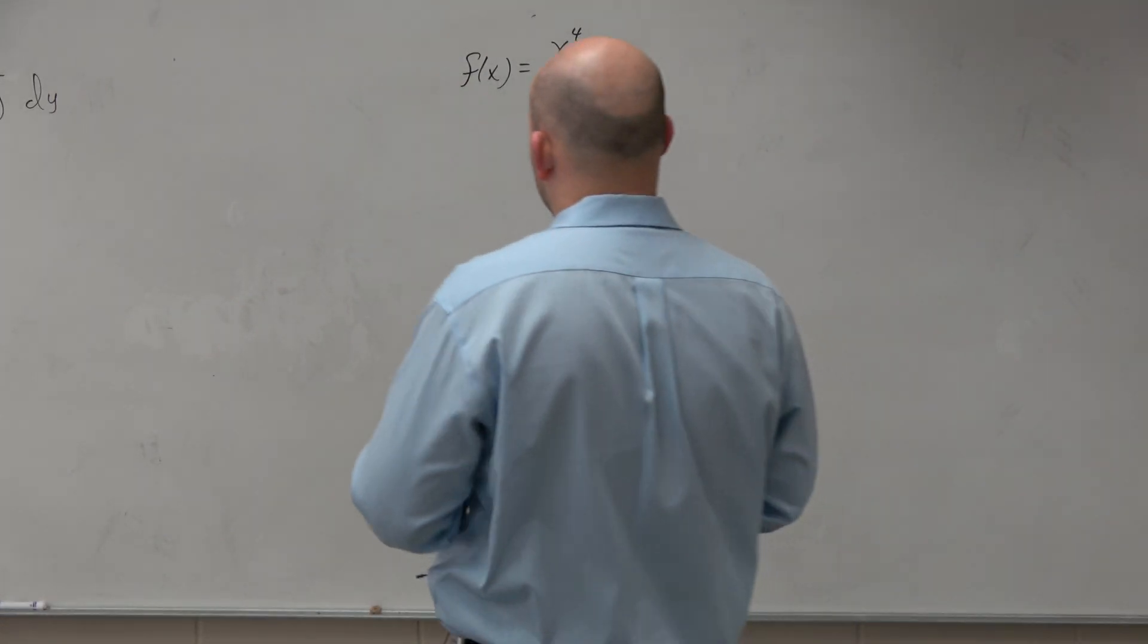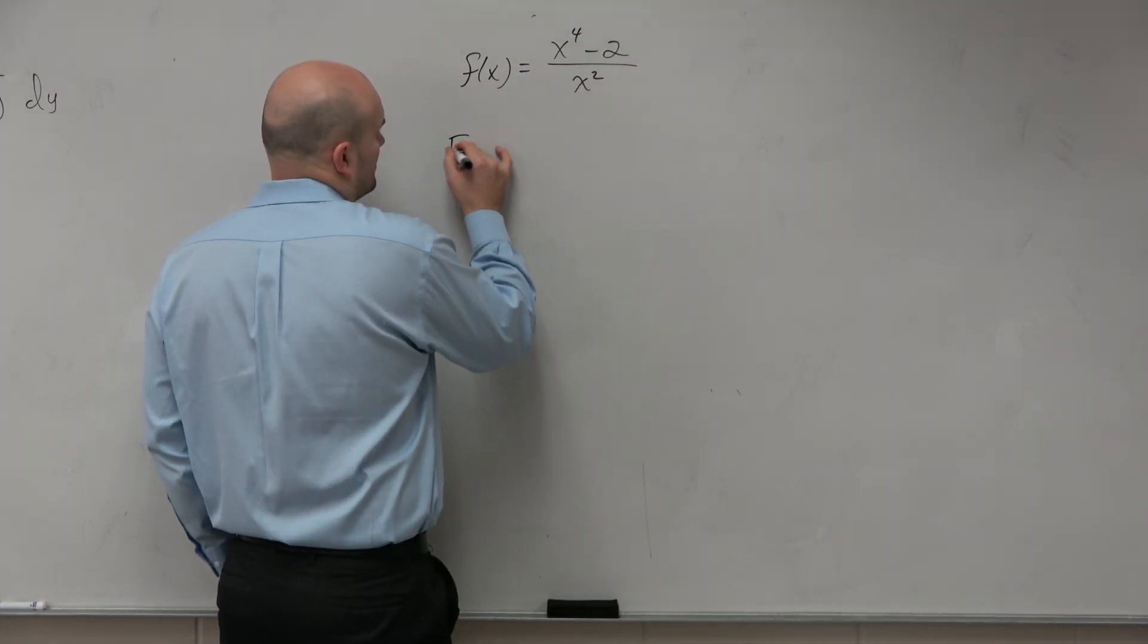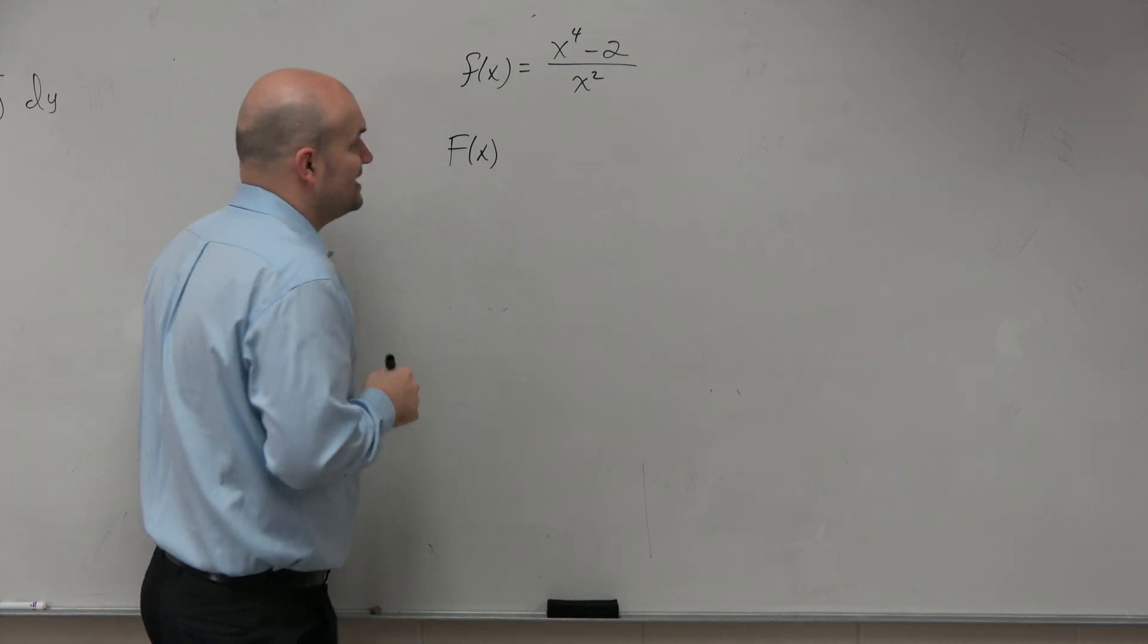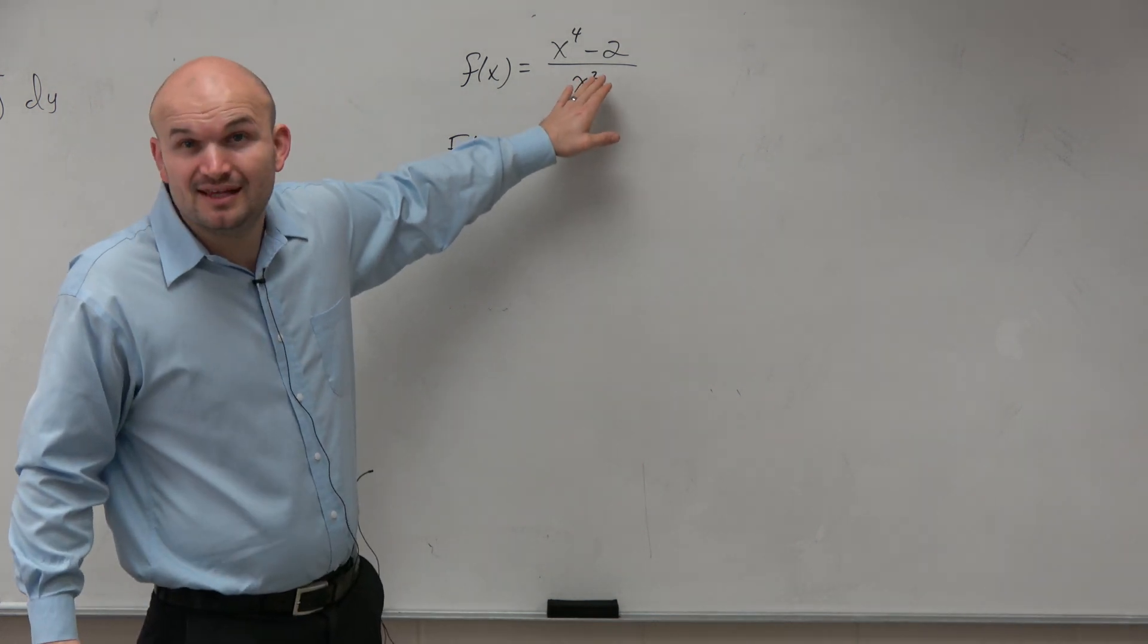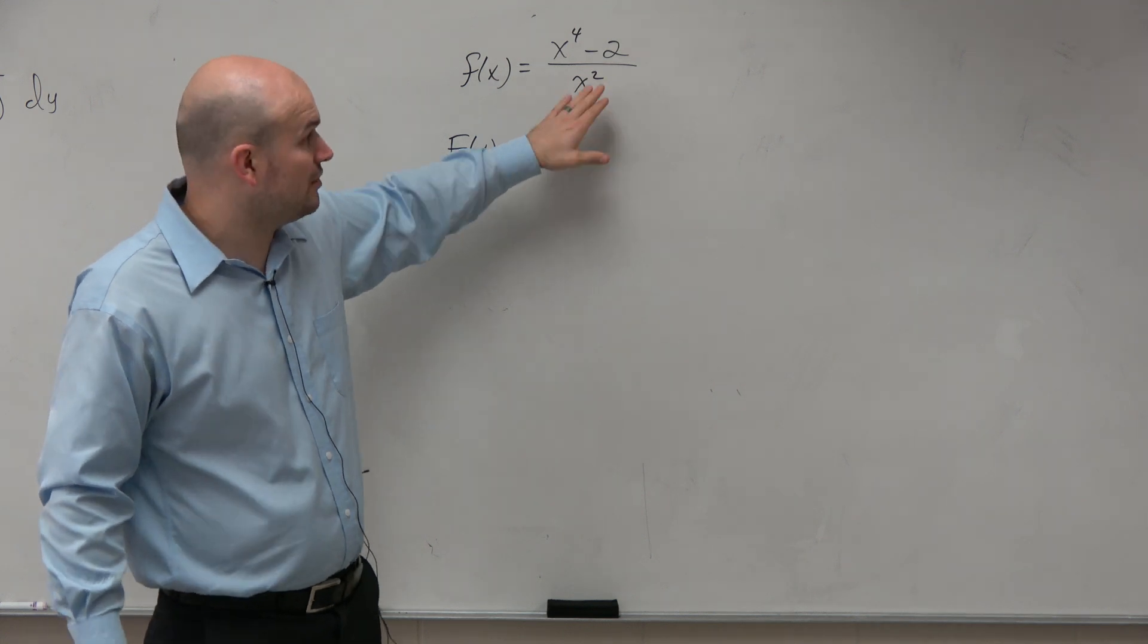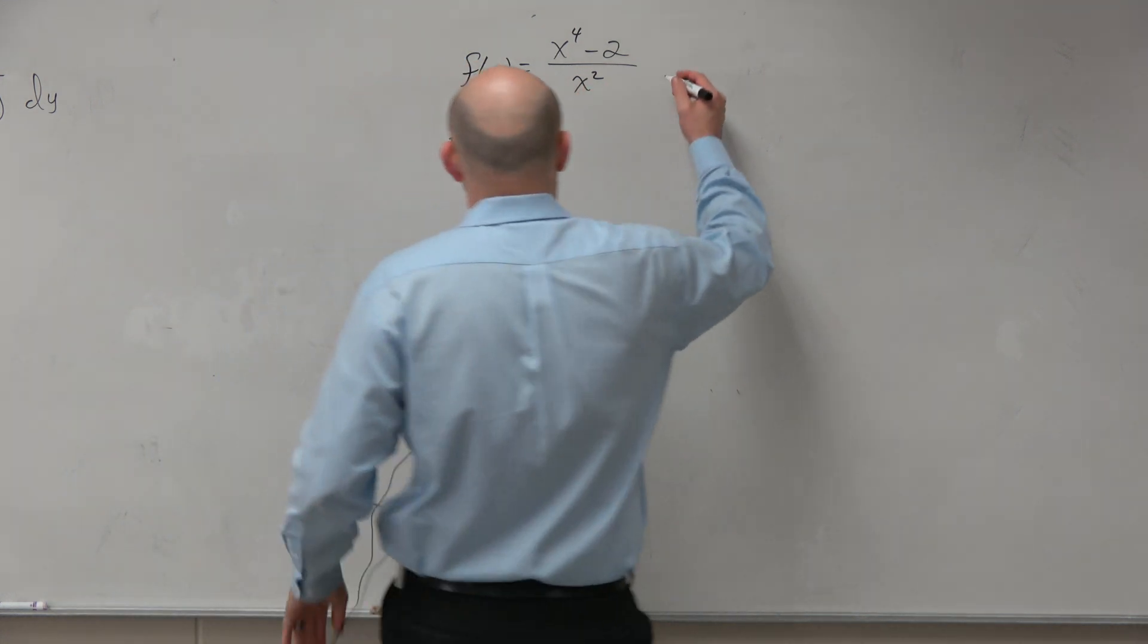So in this one, again, if we're trying to find our general antiderivative, the first thing we want to do is obviously try to simplify this, because we don't have a quotient rule for anti-differentiation.